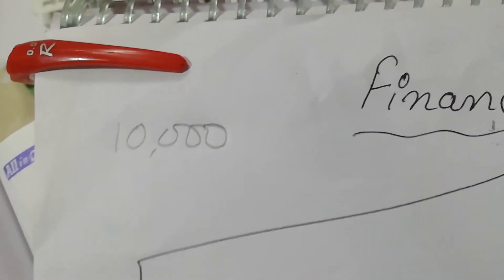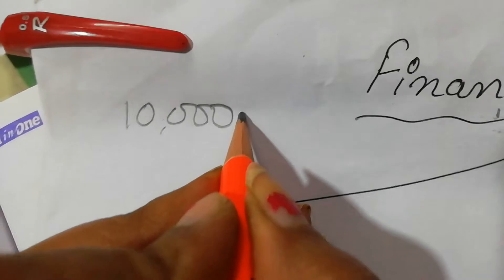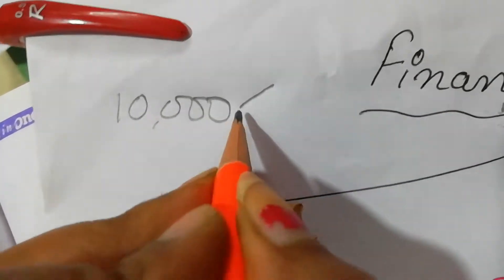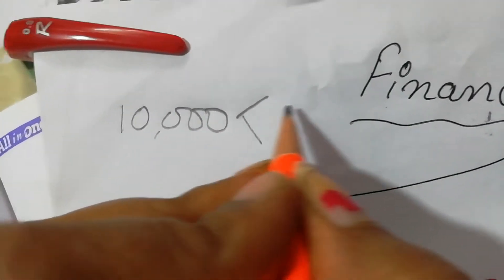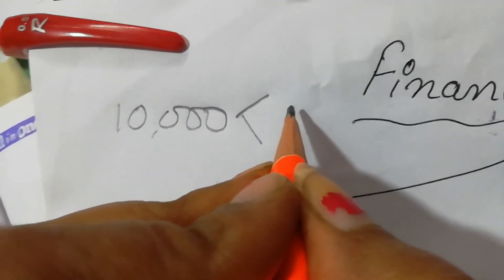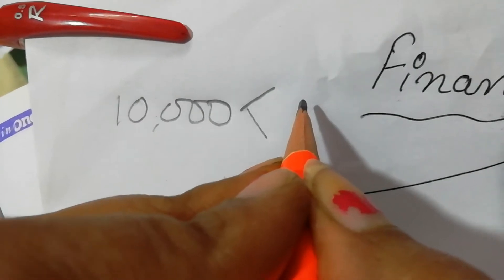Now just take an example. Suppose you want to start a business and you have collected 10,000 rupees. You have divided this 10,000 rupees into two parts. If you want to open the shop,